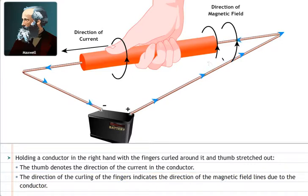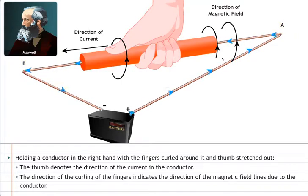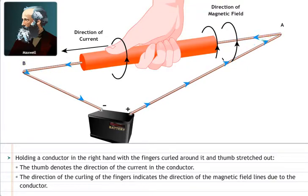In the example shown, the current in the wire AB passes in the direction of the thumb, from end A to end B. The direction of the magnetic field due to the current in the wire is represented by the curl of the fingers, as shown.